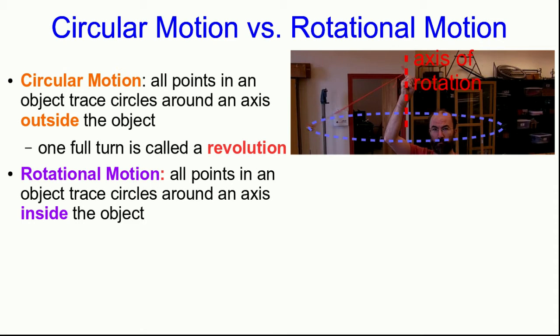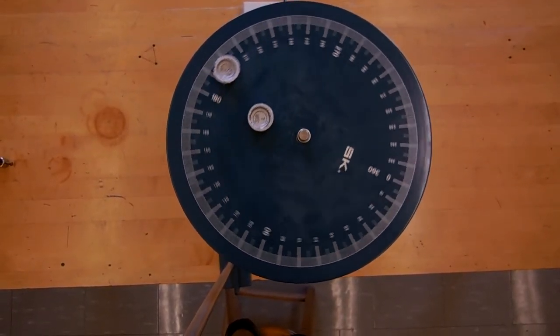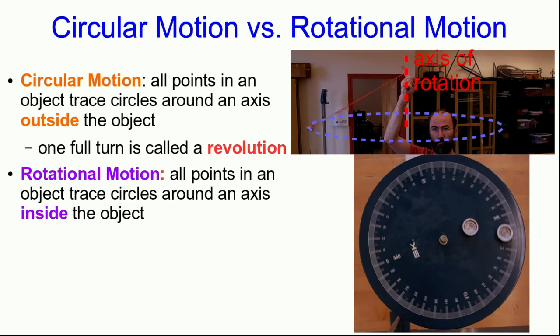On the other hand, here's an example of rotational motion. This is a turntable rotating. And in rotational motion, all points in an object trace circles. However, the axis passes through the object. So if we focus on the S and the path it follows, it makes a circle, and it's around an axis which passes through the middle of the object. So this is rotational motion. And in this case, we call a full turn of the object a rotation.